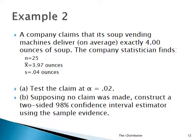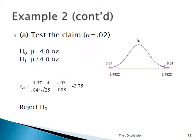Here's another example. A company claims that its soup vending machines deliver, on average, exactly 4 ounces of soup. The company statistician takes a sample of n equals 25 and finds a sample mean x-bar of 3.97 ounces, and a sample standard deviation s of 0.04 ounces. Part A is to test the claim at alpha equals 0.02, and Part B is to construct a two-sided confidence interval estimator.